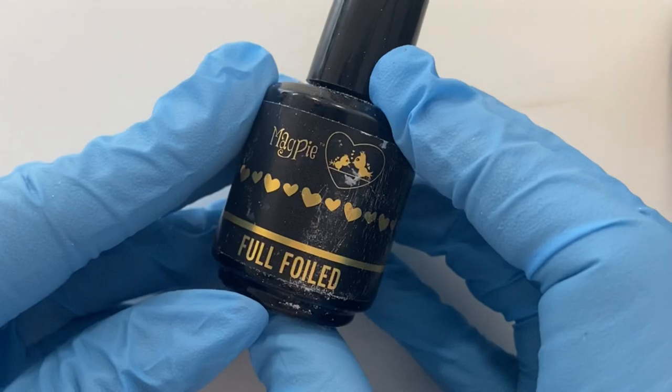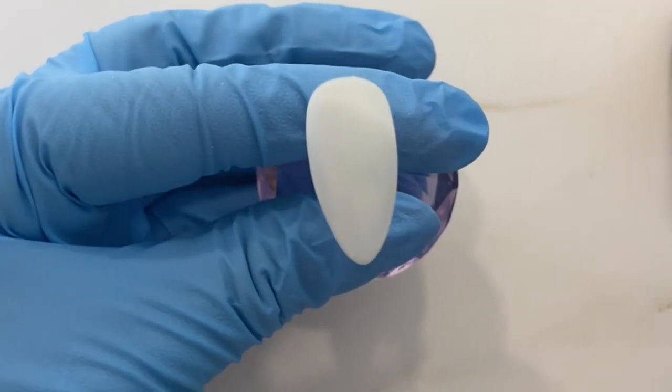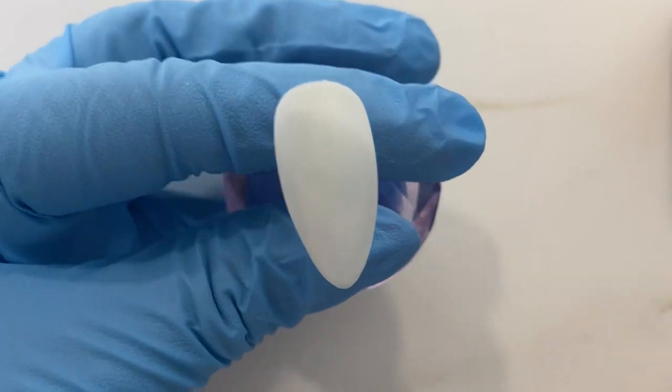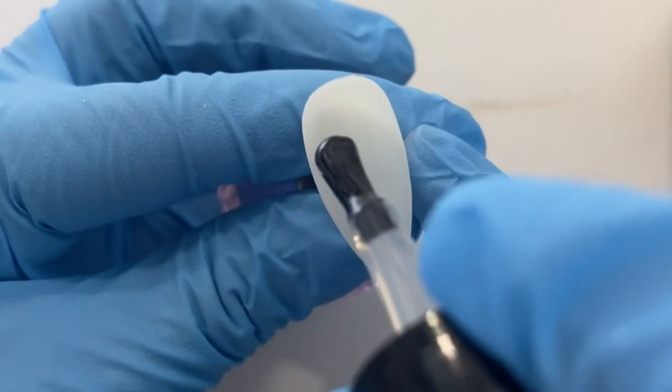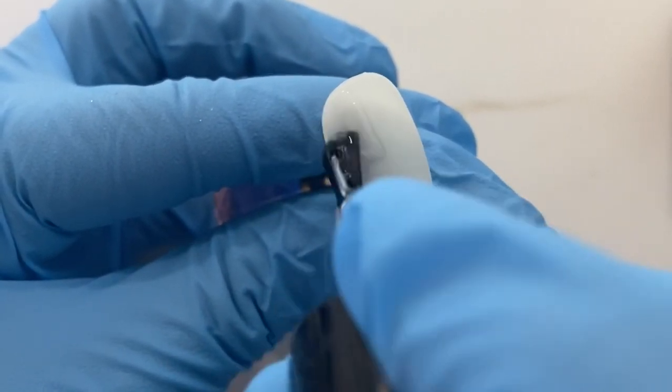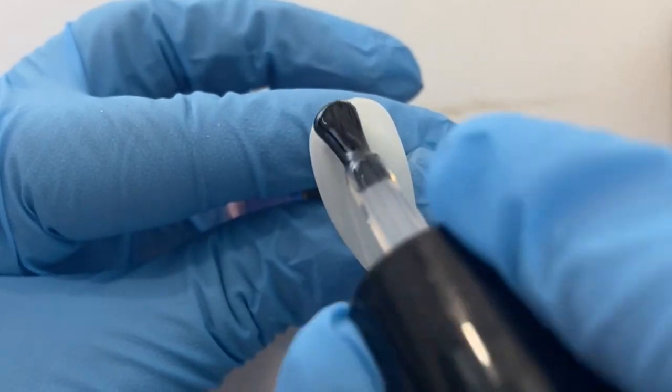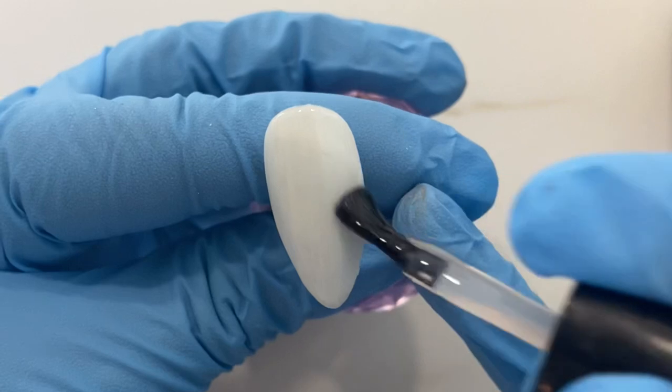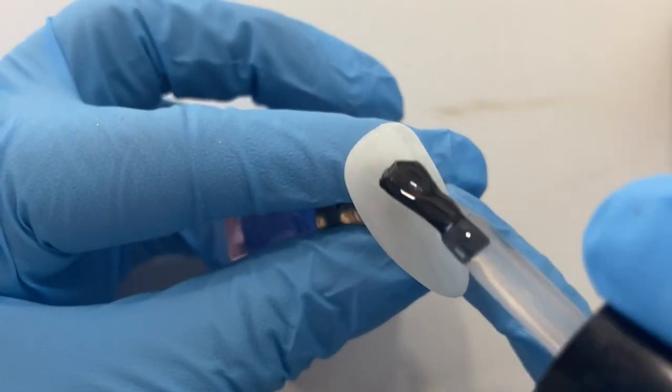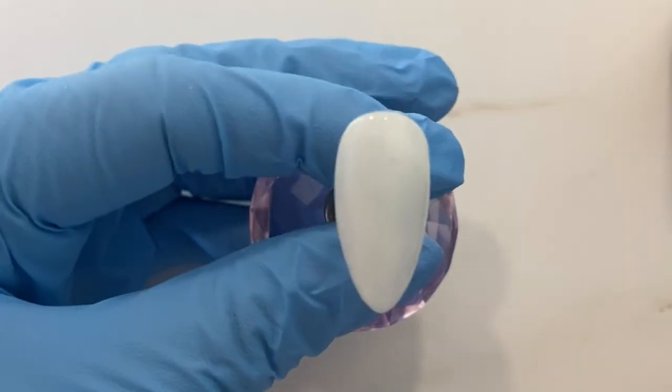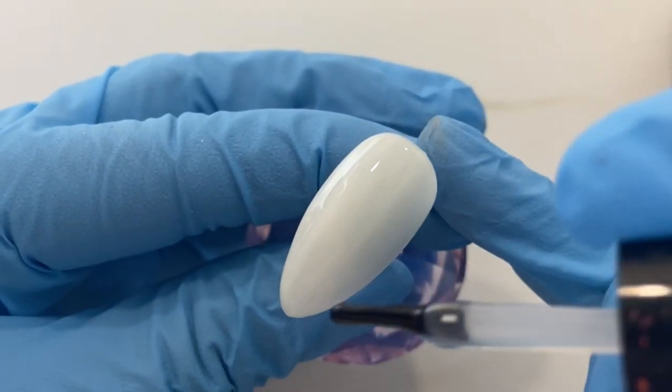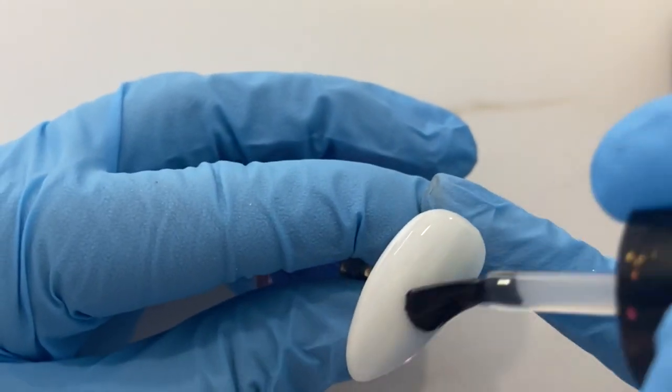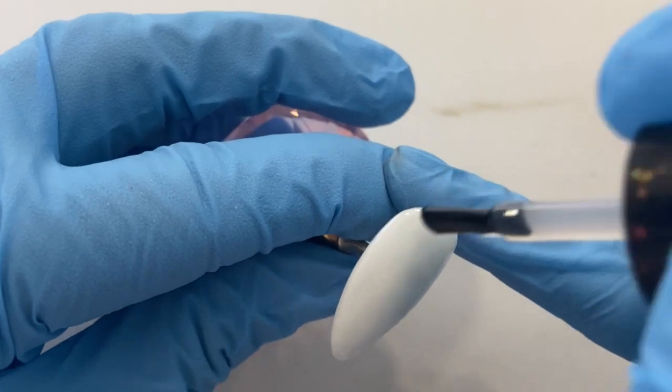We're then going to do a really thin coat of foil gel. We're going to make sure this coat is really nice and smooth and really nice and thin. If it's not, it will show up any little lumps in your foil when we apply it on top. Another way I found works really well with the foil gel is by curing it in the Magpie Beauty lamp for a minute and a half. It just makes the foil gel even more glue-like. So we're going to pop this into our lamp for a minute and a half to cure before we apply that foil on top.